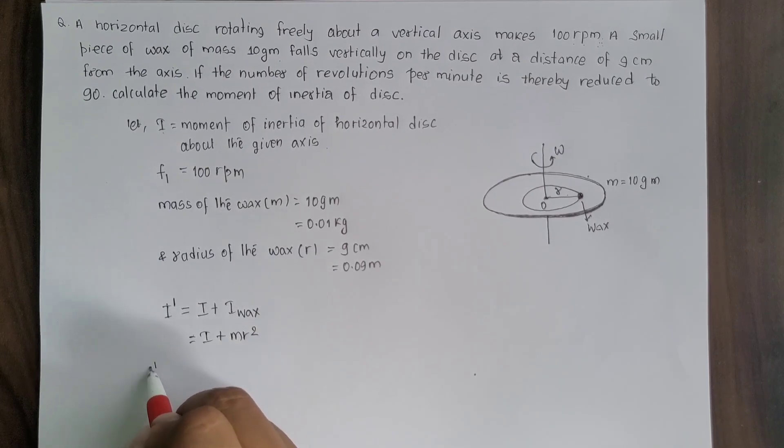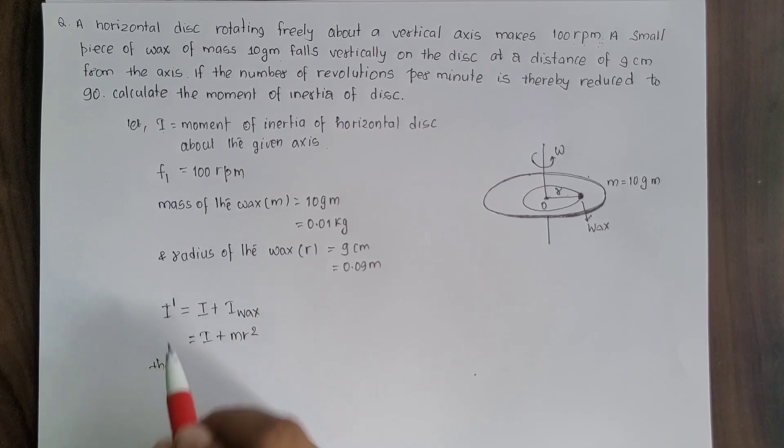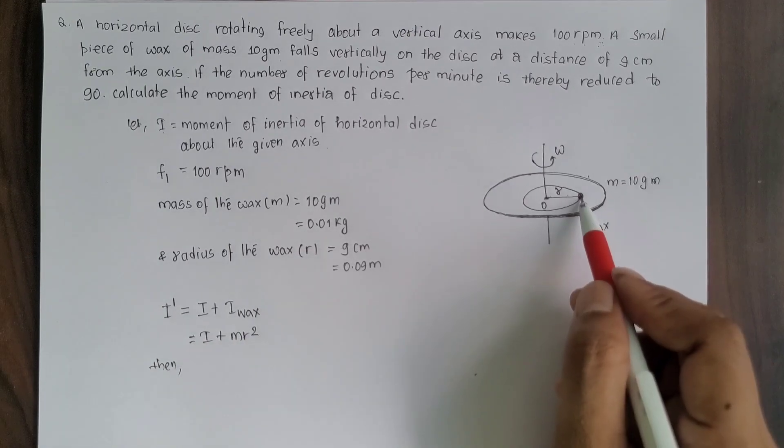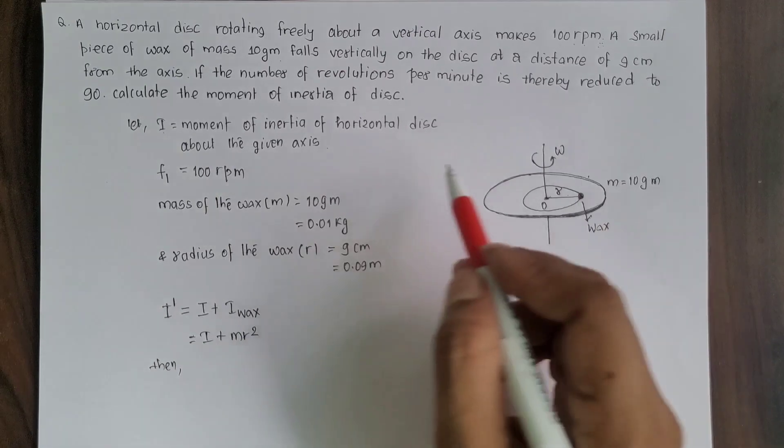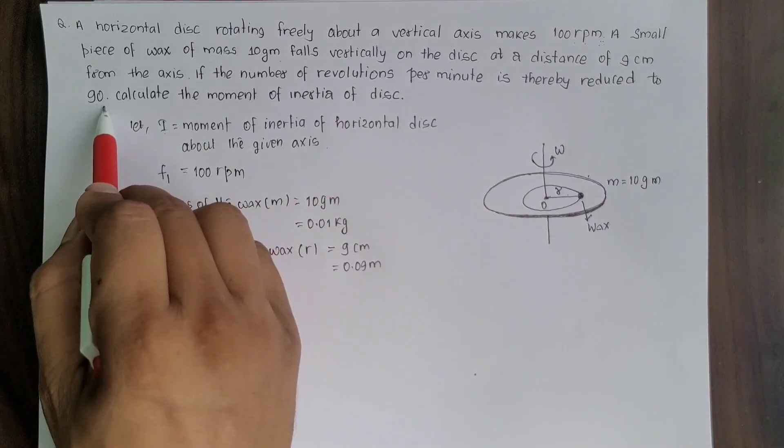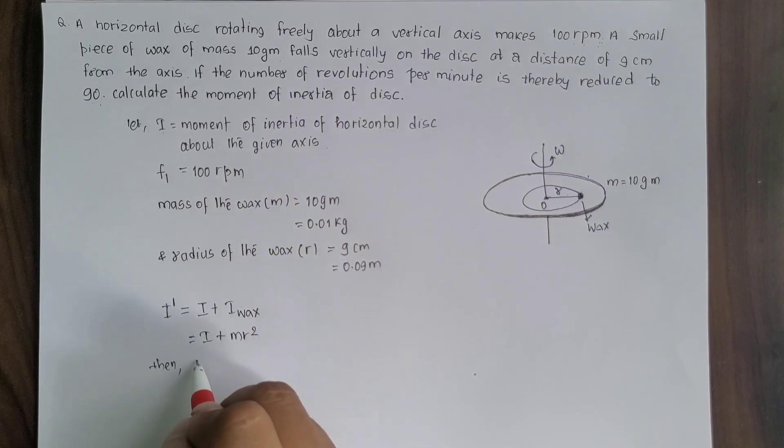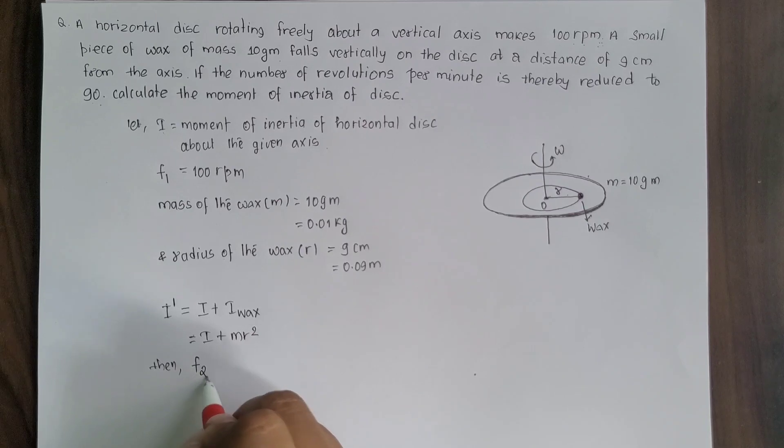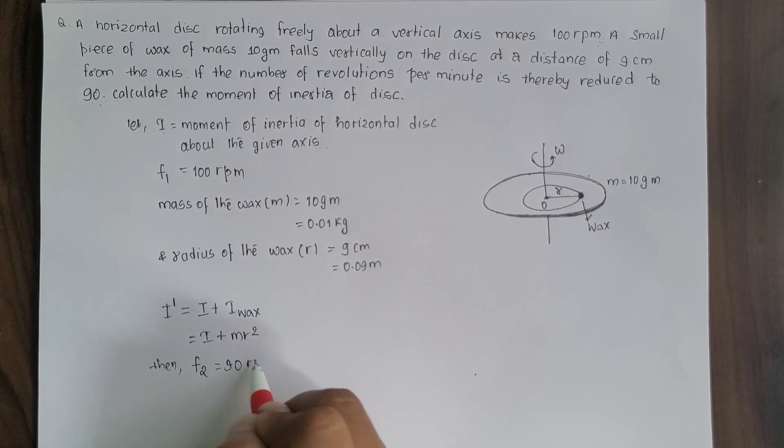When the moment of inertia of the disc increases after putting the wax on there, the frequency of revolution reduces to 90 revolutions per minute. The new frequency value is 90 revolutions per minute.